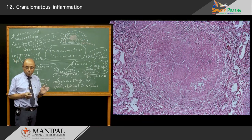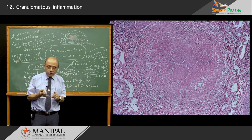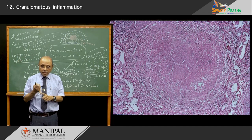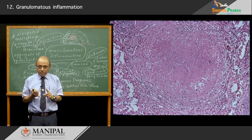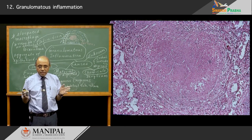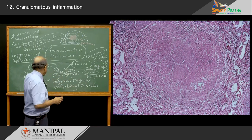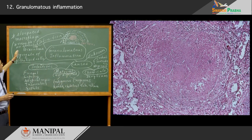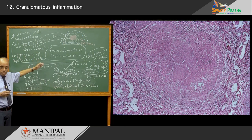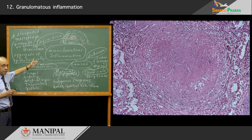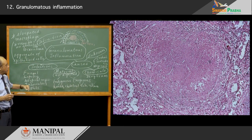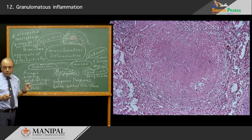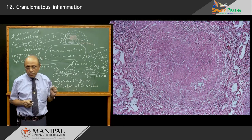I hope you have understood today the importance of the epithelioid cell in a granuloma — that is the most important cell. Everything else is secondary. We have seen the major causes for granulomatous inflammation, and it is necessary for us to recognize granuloma on the presence of these epithelioid cells. Thank you very much.